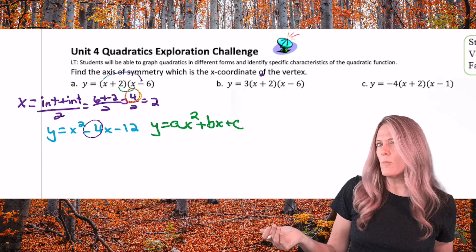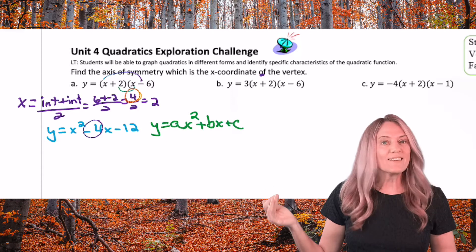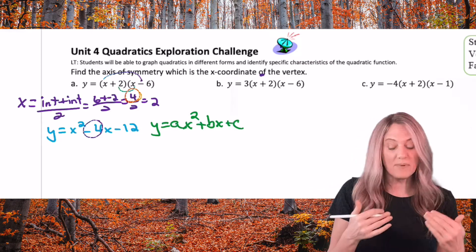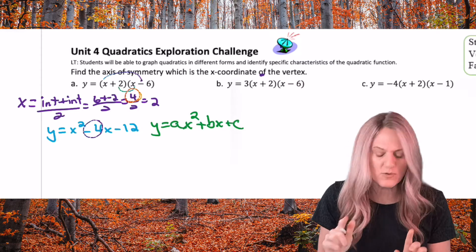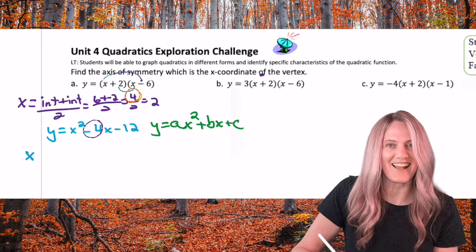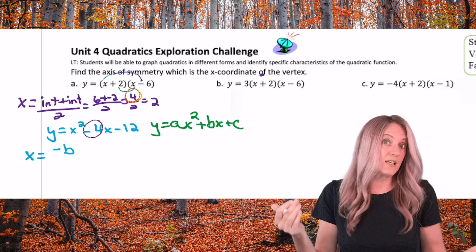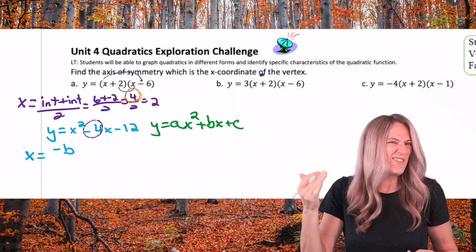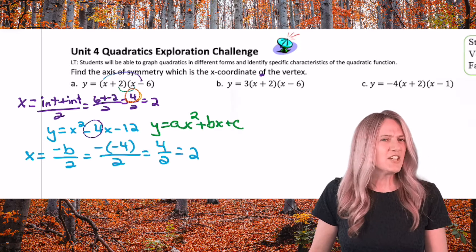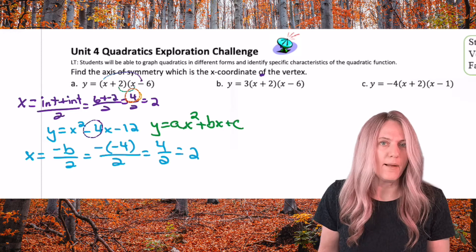I have this negative 4 here, and when I did intercept plus intercept I had a positive 4. Why would they be almost the same but not quite? Well, inside opposite — remember for the intercepts we do opposite. So if I want the axis of symmetry it seems like I could do x equals the opposite of b: negative b, because negative negative 4 is positive 4, and then divide by 2. I get x equals 2 this way as well.